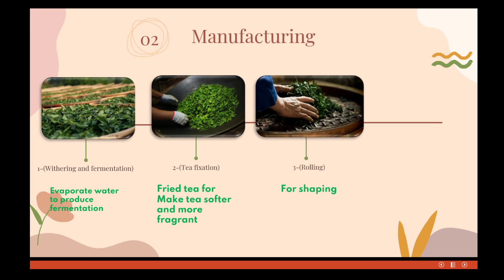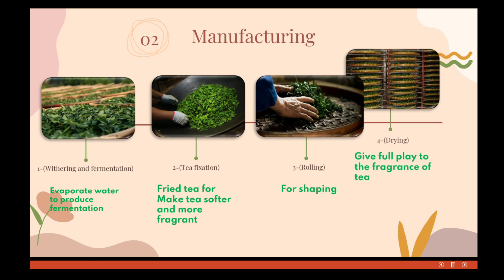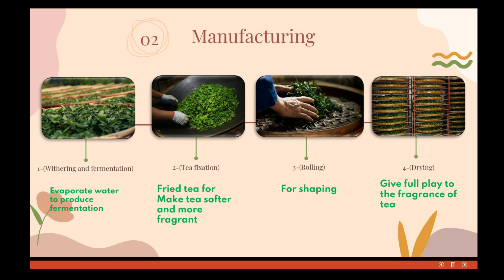The third production process is rolling, which involves shaping the tea by manual or machine processing. The fourth step is called drying — the last step is to completely evaporate the water from the tea by baking, pan drying, or arranging the shape, to give full play to the tea's fragrance.